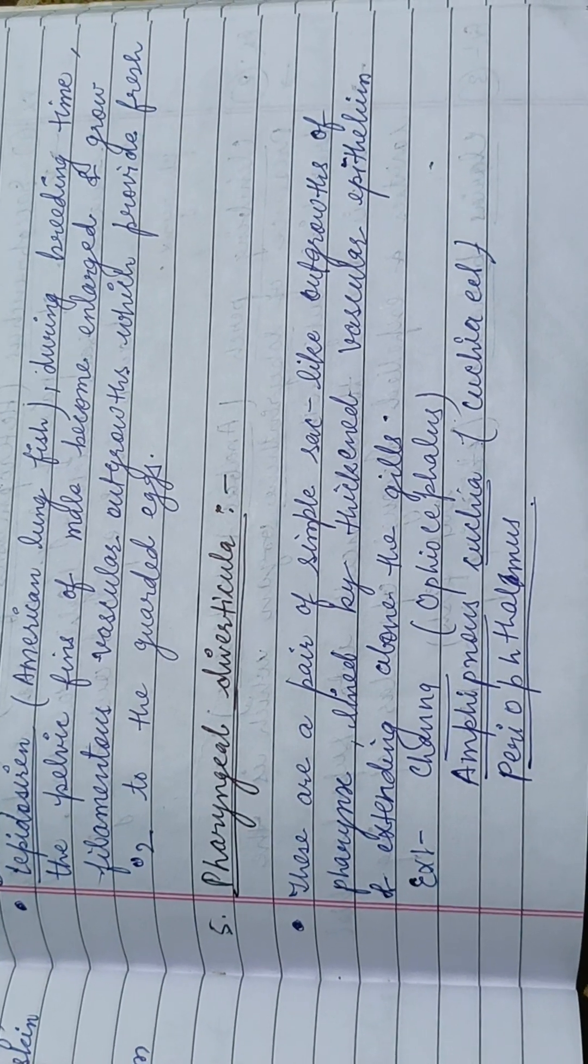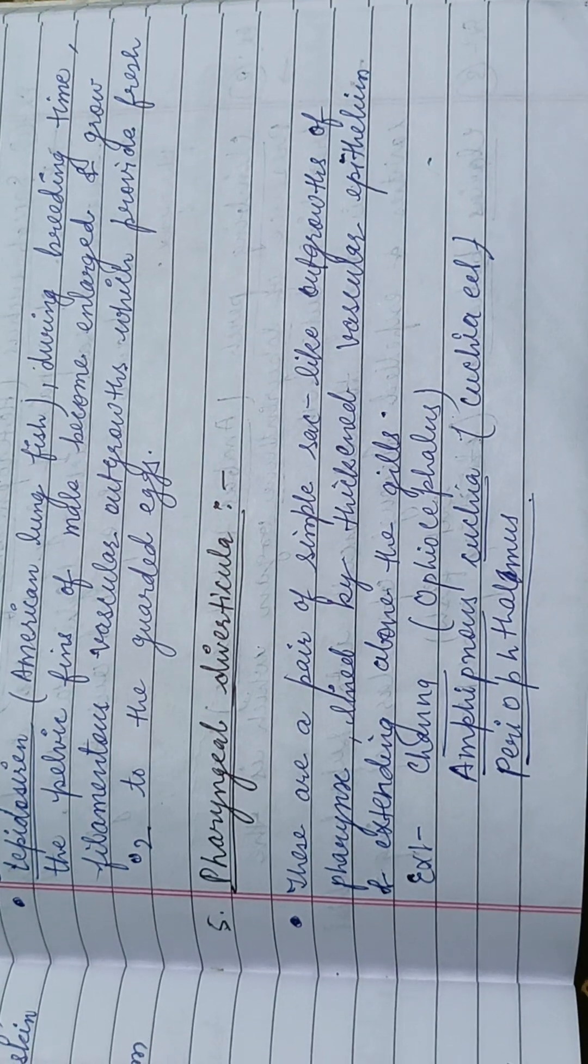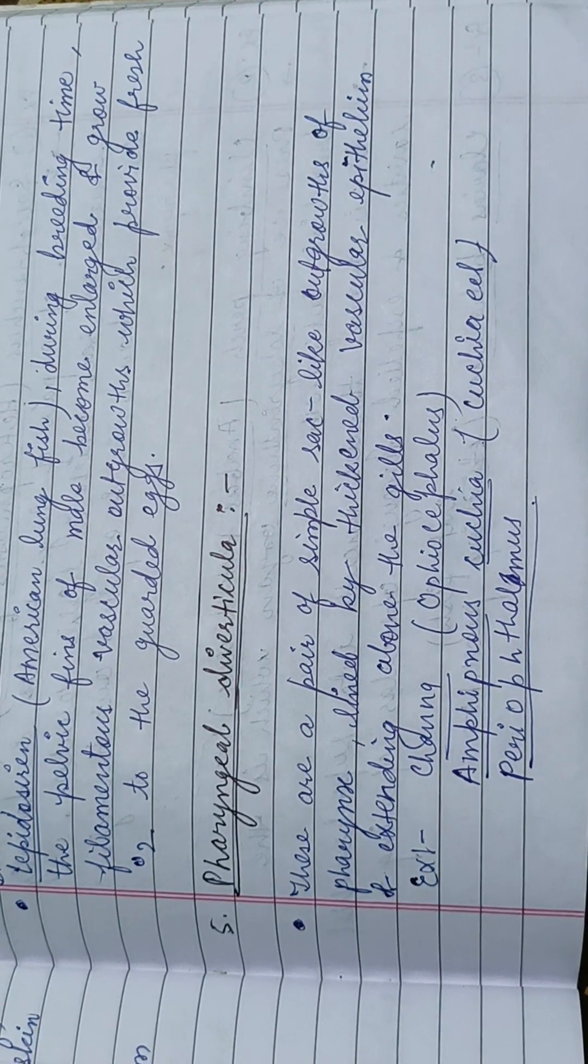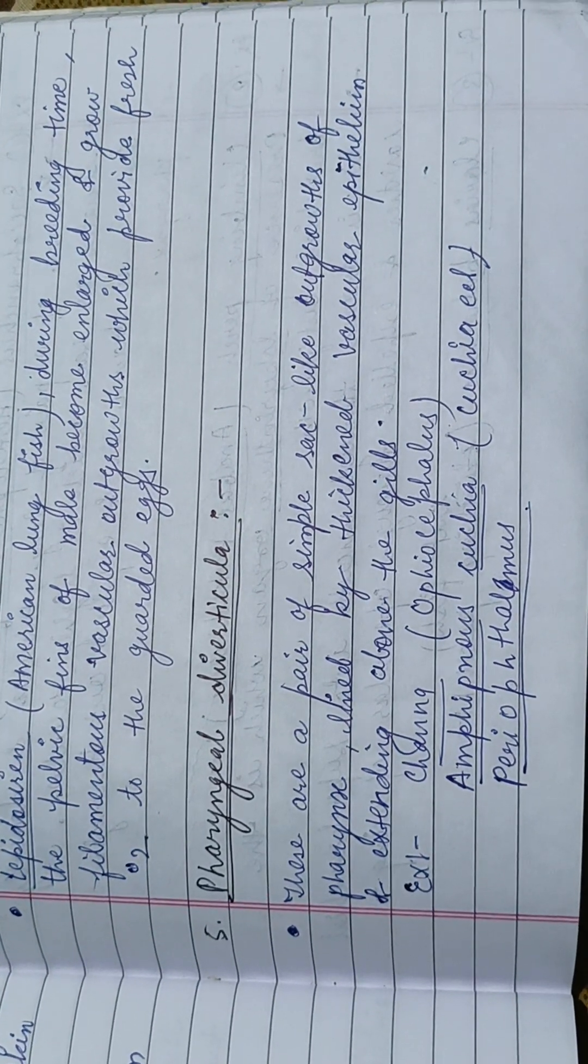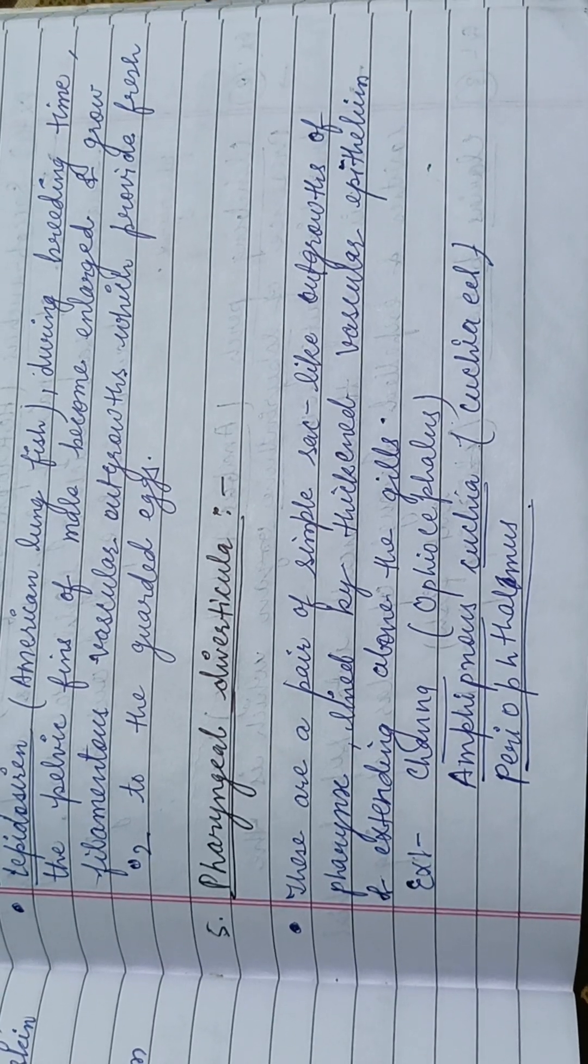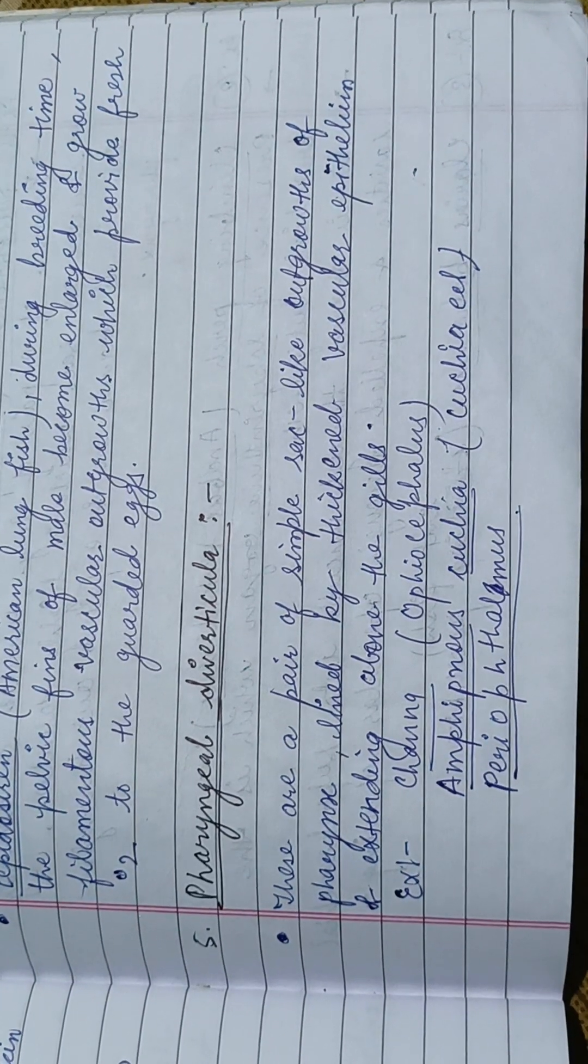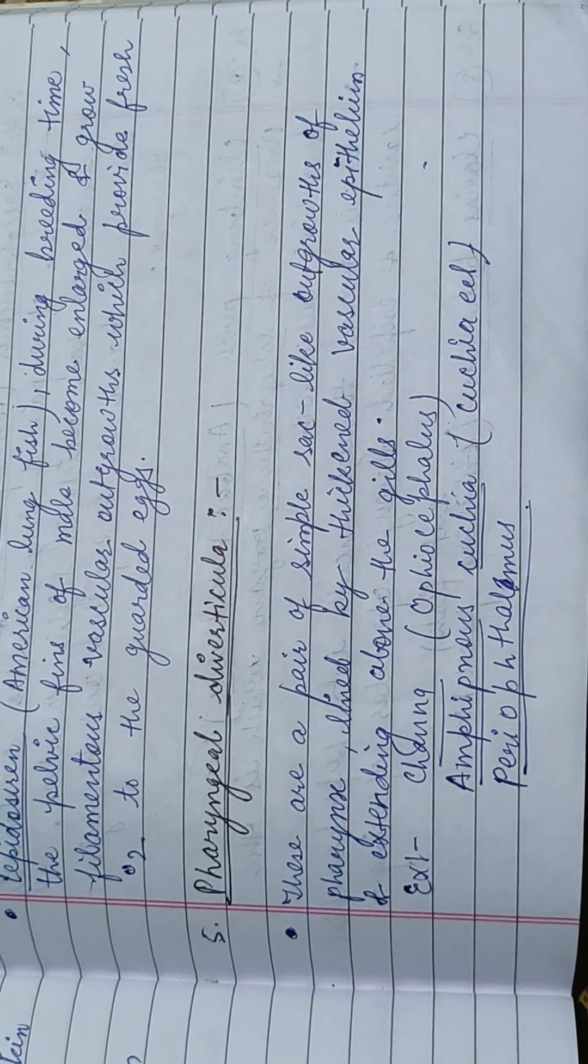Next is the pharyngeal epithelium diverticula. It is a pair of simple sac-like outgrowths of the pharynx, lined by thickened vascular epithelium extending above the gills. Examples are Channa, Amphipnous, Cuchia, and Periophthalmos.